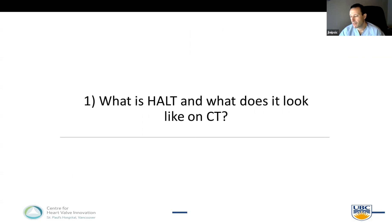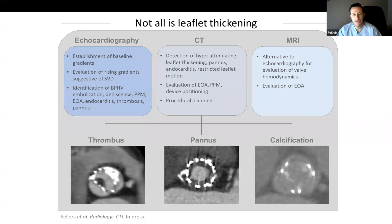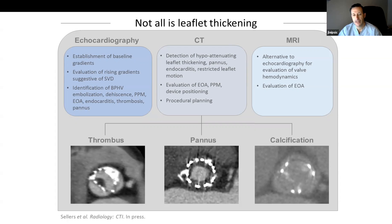The first question when doing post-implant TAVR imaging is really important to understand: what is hypo-attenuating leaflet thickening, and what does it look like on CT? CT is an anatomical test, and it allows us to in a granular fashion characterize the post-implant imaging of the device. We can characterize thrombus from circumferential pannus from calcification, all manifesting with very different CT-based imaging phenotypes, and this ability to discriminate these pathologies is essential to better refine our understanding of risk as well as treatment.